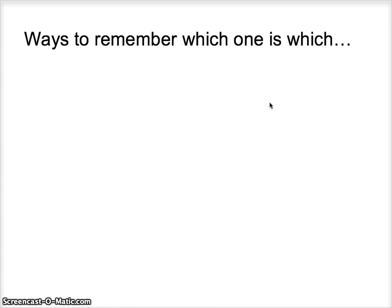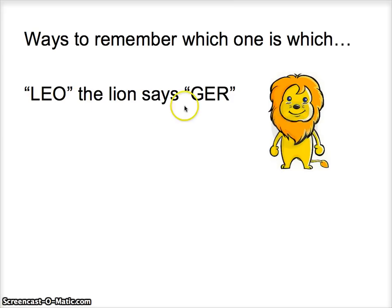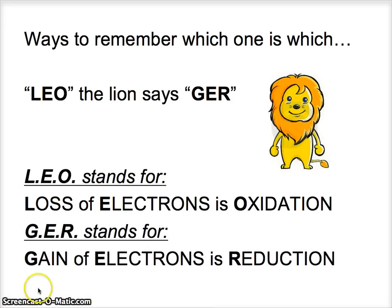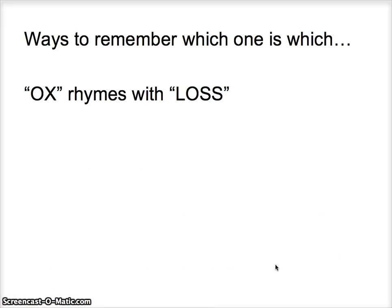How do you remember which one is which? I always used rhymes and acronyms when I was in grade 12. Hebden suggests 'Leo the lion says GER.' Leo and GER are two acronyms: Leo stands for 'loss of electrons is oxidation,' and GER stands for 'gain of electrons is reduction.' One that I always liked is that 'ox rhymes with loss.' Ox, loss — oxidation refers to the loss of electrons.